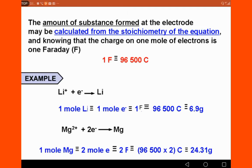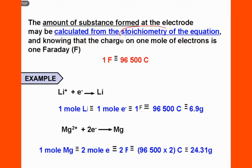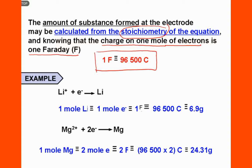The amount of substance formed at the electrode may be calculated from the stoichiometry of the equation, knowing that the charge of one mole of electrons is one Faraday. One Faraday is equal to 96,500 Coulombs.